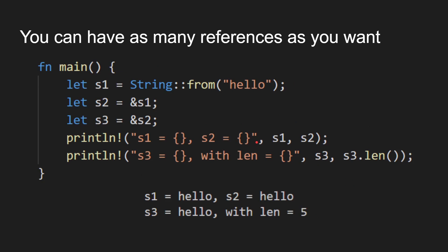These references — you can have as many as you want. S1 is the string. S2 is a reference to S1. Then you can have S3, which is a reference to what S2 is pointing to. You can cascade them and have as many as you want. You can print out S1, S2, and S3, and even work out the length of S3. All of them refer to one block of data in memory called hello. The output is hello, hello, hello, with a length of 5. This works easily because it's all read-only.